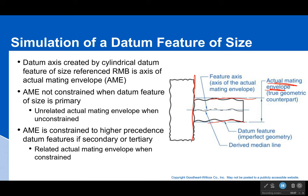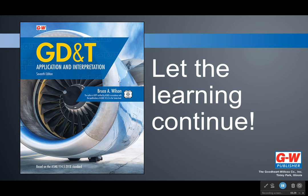The datum axis does not come from the actual curved line of the feature. It comes from the actual mating envelope — this perfect cylinder that fits around the actual cylinder. We use that for our axis, and that's what becomes the datum axis.